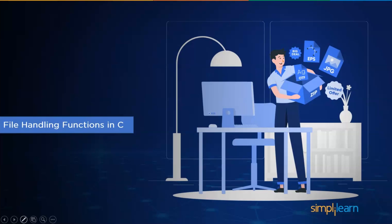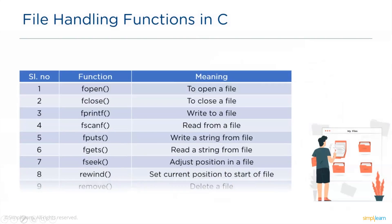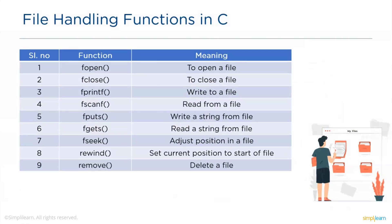There are many functions to handle files in C, but in this session we'll cover a few basic and important ones. The fopen function is used to open an existing file; if the file is not present it will return NULL. The fclose function must be called after completing operations on a file, as there is a limit to how many files can be open at a time. The fprintf function is similar to printf, but writes values to a specified file. The fscanf function is similar to scanf, but reads data from a specified file.